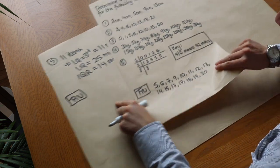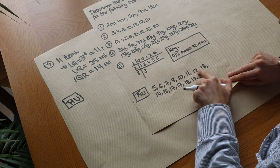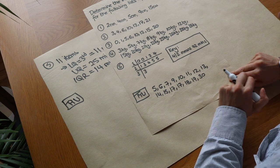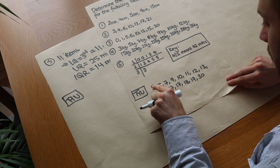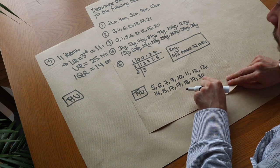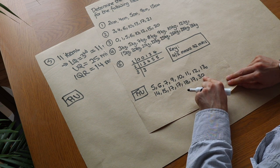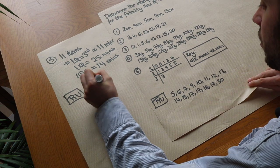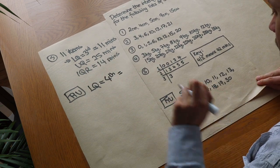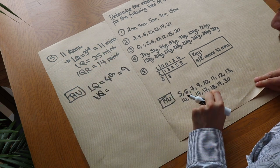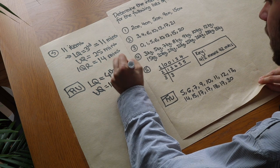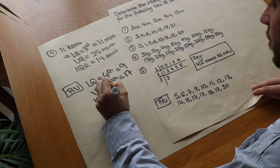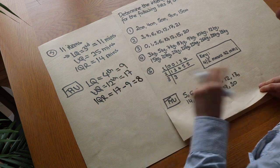Now for the test your understanding question: 5, 6, 7, 9, 10, 11, 12, 13, 14, 15, 17, 17, 18, 19, 30. Find the interquartile range. You may want to pause the video to have a go. Counting the items, there are 15 — one less than a multiple of four. Add 1 to get 16, divide by 4 to get 4. The lower quartile is the 4th item, which is 9. The upper quartile is the 12th item, which is 17. Therefore the interquartile range is 17 minus 9, which equals 8. Well done if you got that right.